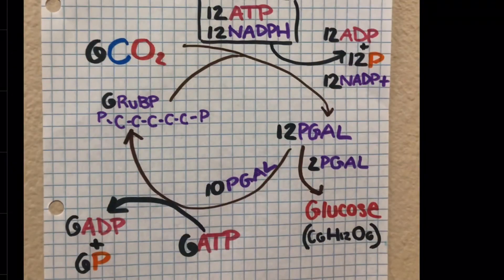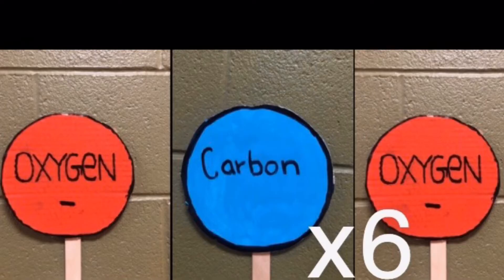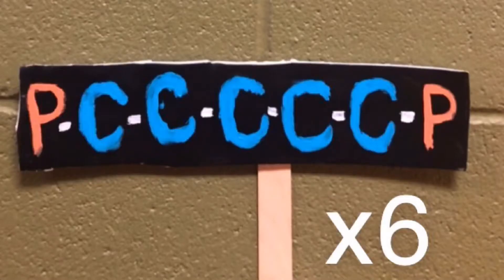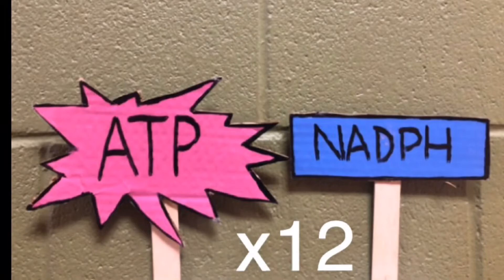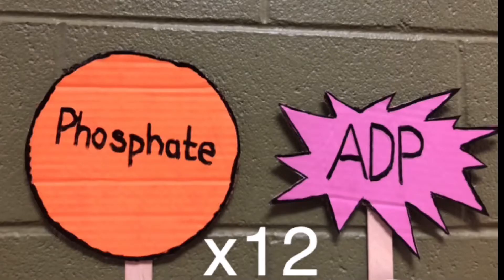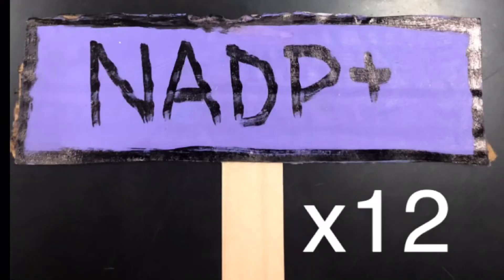Next is part 2, which is the light-independent reaction, also more commonly known as the Calvin cycle. The Calvin cycle starts off with 6 carbon dioxide molecules, then comes the 6 RUBPs. Then 12 ATP and 12 NADPH are used, making 12 ADP and 12 phosphates, which yields 12 NADP+.